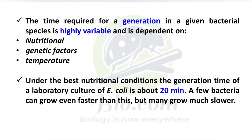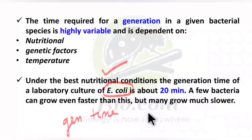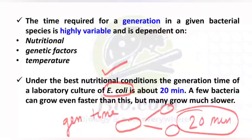One question frequently asked from this topic is the generation time of E. coli. If we meet all the nutritional requirements and optimal conditions of this bacteria, the generation time for one E. coli to divide into two new E. coli is approximately 20 minutes. So remember: E. coli at optimum conditions has a generation time of 20 minutes. This varies bacteria to bacteria depending on those factors.